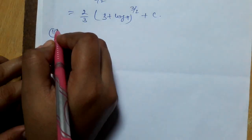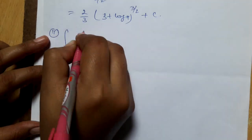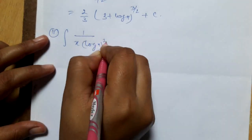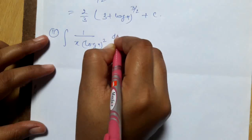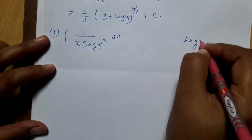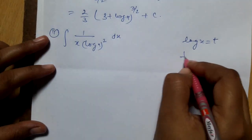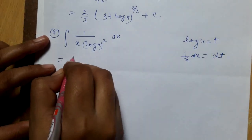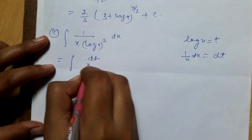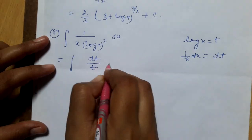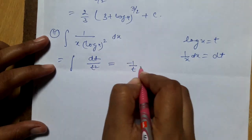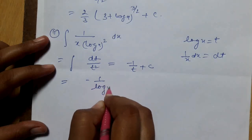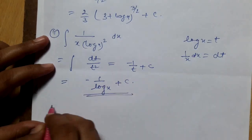Part 2: integration of 1 / (x · (log x)²) dx. Put log x = t, so 1/x dx = dt. The integral becomes ∫dt / t², which integrates to −1/t + c. Substituting back, the answer is −1/(log x) + c.